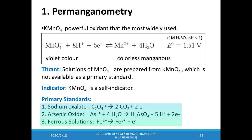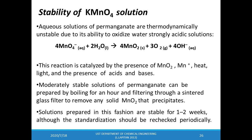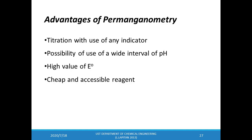Aqueous solutions of potassium permanganate are not stable due to its ability to oxidize water in a strongly acidic solution. This reaction is catalyzed by the presence of manganese dioxide, the manganous ion, heat, light, and other acids and bases. A moderately stable solution of permanganate is prepared by boiling it for an hour and filtering through a sintered glass filter to remove solid manganese dioxide. A solution of potassium permanganate can be stable for up to one to two weeks, although the concentration should be rechecked by periodic standardization.